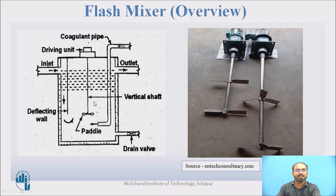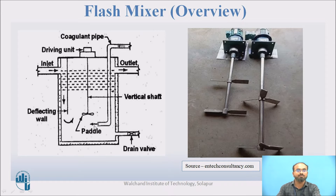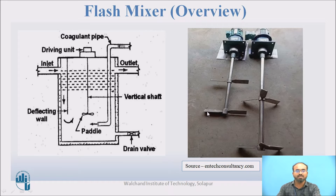This is a typical diagram of a flash mixer where you can see paddles provided for flash mixing. The inlet is always from the top part, and there is a deflecting wall so that water passes through, entering the tank from the bottom side and coming out to join the outlet. The dose being added is always added near the paddle — at the bottom of the paddle. Impurities that settle due to higher density than water can be removed through the drain. The paddles, which we typically design, involve determining their diameter, shape, and size.